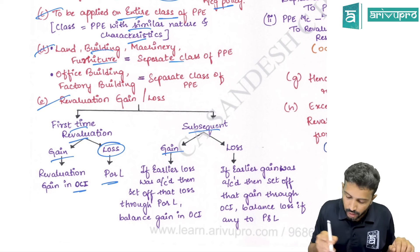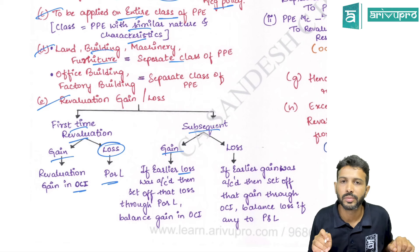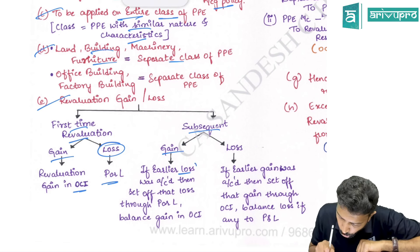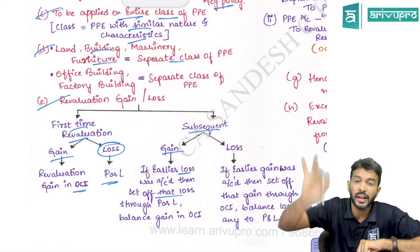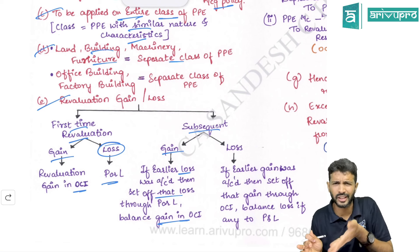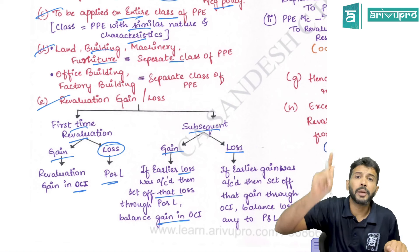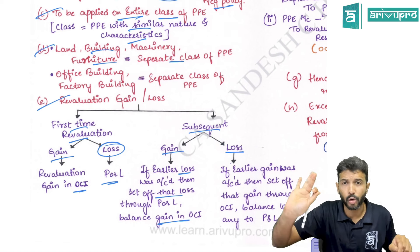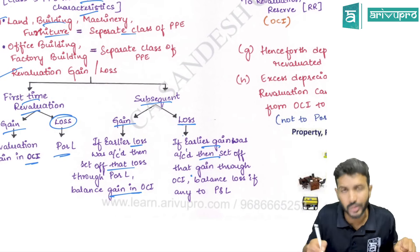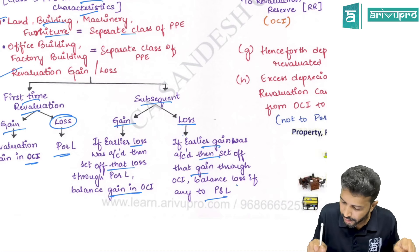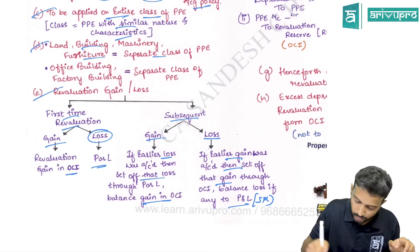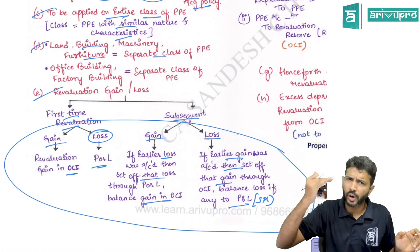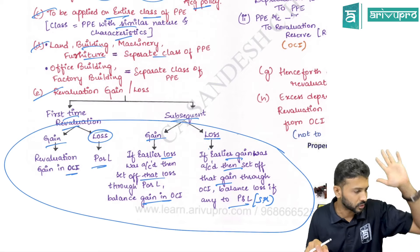If a subsequent gain arises after a previously recognized loss, first reverse or set off the earlier loss, and only the remaining gain is recognized as revaluation surplus in OCI. Conversely, if a subsequent loss arises after a previously recognized gain, first set off the loss against the existing revaluation surplus; only any remaining balance of loss is transferred to P&L.